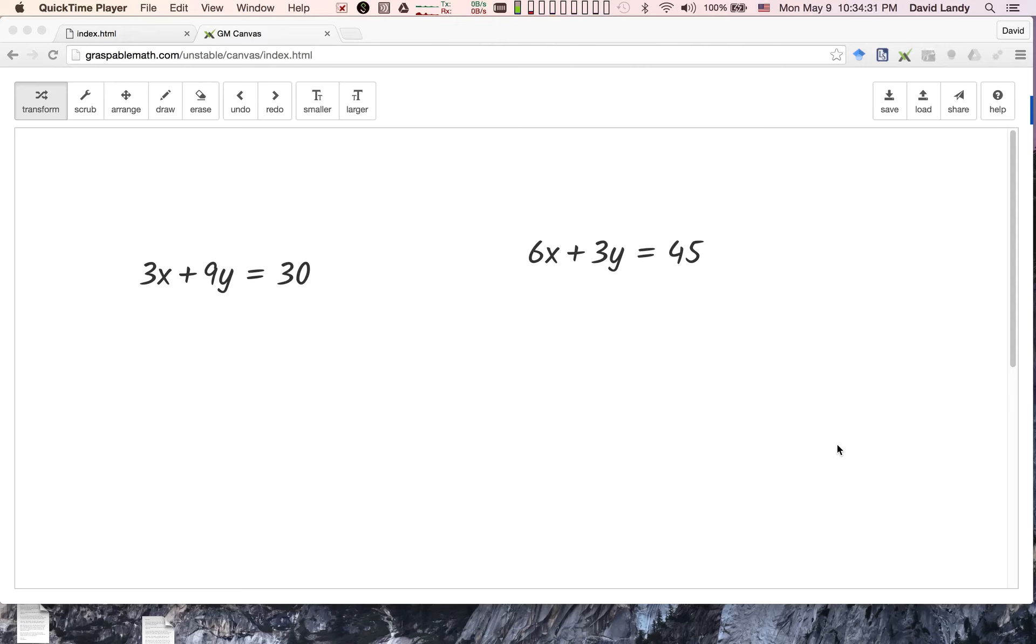I'm going to show you the kind of thing you can do in Graspable Math, just using the tool by itself. I'm going to start with an example that's pretty common in middle school math classes. That's where you've got two equations and two unknowns, and you're solving these simultaneous linear equations. You can see them right here on the screen on this whiteboard.